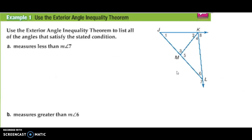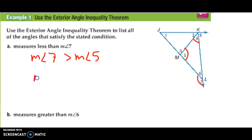Now let's use the exterior angle inequality theorem to answer a couple of questions. First, we need to find all angles whose measure is less than the measure of angle 7. Here's angle 7 — its remote interior angles are going to be angle 5 and angle 4. So we know that the measure of angle 7 is greater than the measure of angle 5, and the measure of angle 7 is greater than the measure of angle 4.